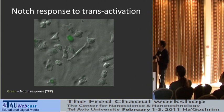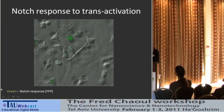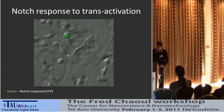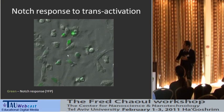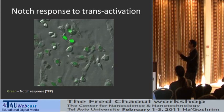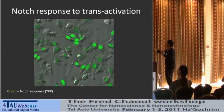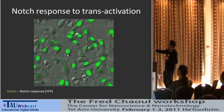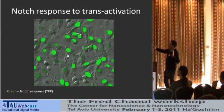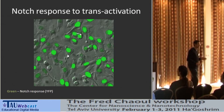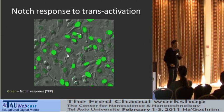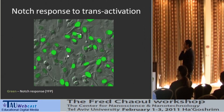This is a movie showing the Notch signaling response to trans-activation. These cells are plated on trans-Delta — there is no cis-Delta, only Delta on the surface. As the movie progresses, cells grow and divide and move around, but they also start to respond to the signal. The response is this fluorescent expression in these cells. We can take these movies, analyze them, track single cells, and obtain data about the Notch signaling response.